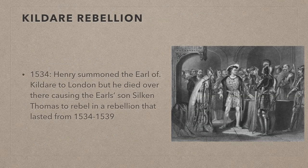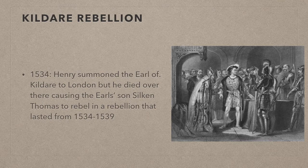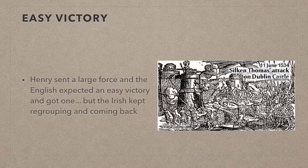Henry was unhappy with how powerful the Earl of Kildare was, and in 1534 he decided to act by summoning the Earl to London. The Earl died in London, and his son believed he had been executed, whereas instead he had died from a gunshot wound sustained in Ireland while fighting the local Gaelic Irish. His son, Silken Thomas Fitzgerald, rebelled against Henry, sparking the Kildare Rebellion, which lasted from 1534 to 1539. Henry sent over a large force and defeated Silken Thomas and the Fitzgeralds of Kildare, as well as the Gaelicised Anglo-Normans who were allies with the Earl of Kildare.